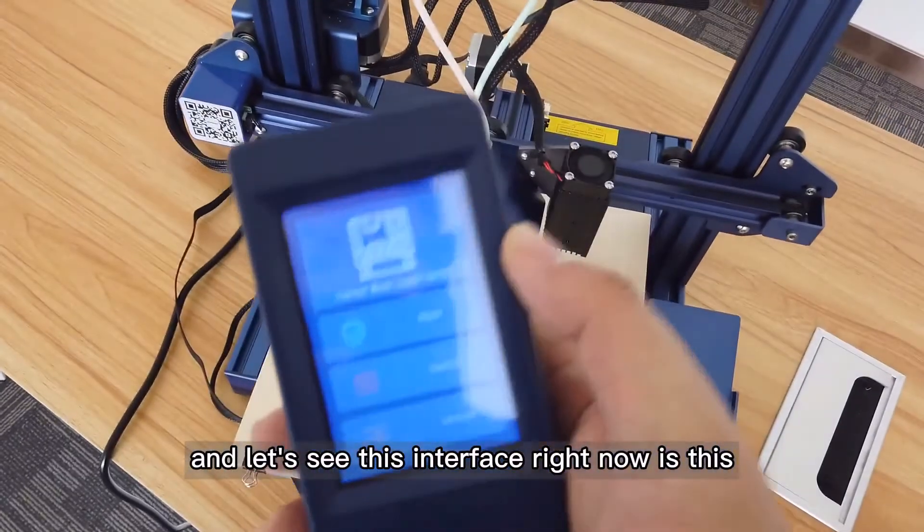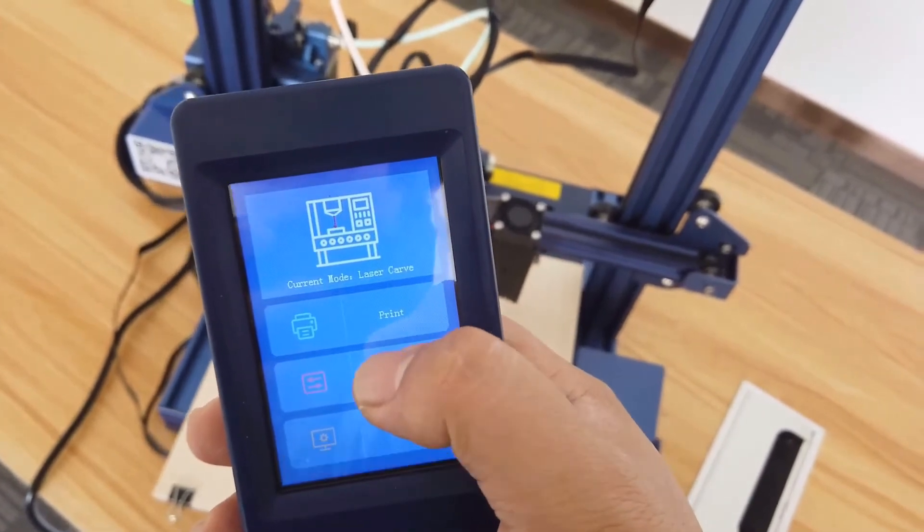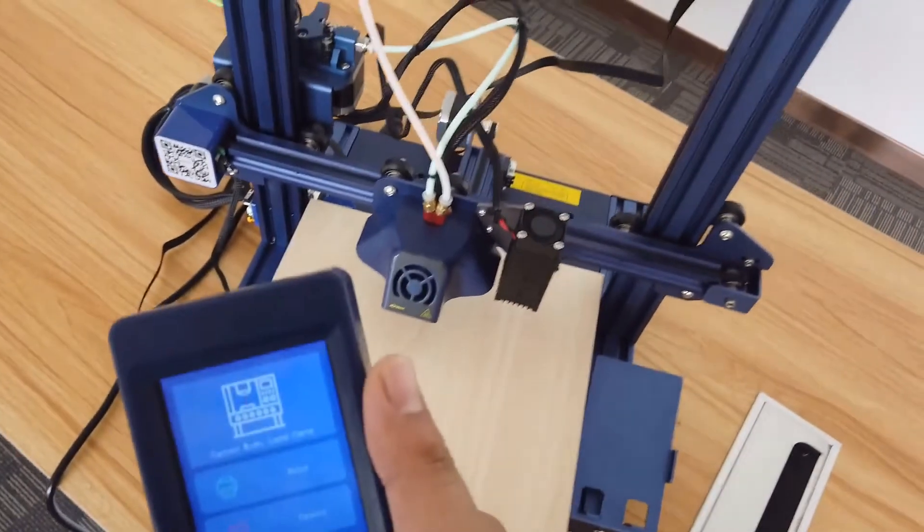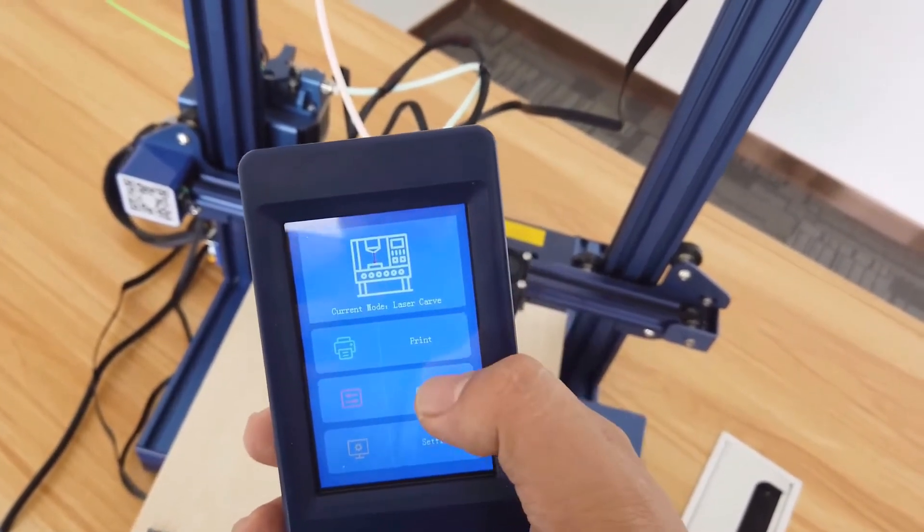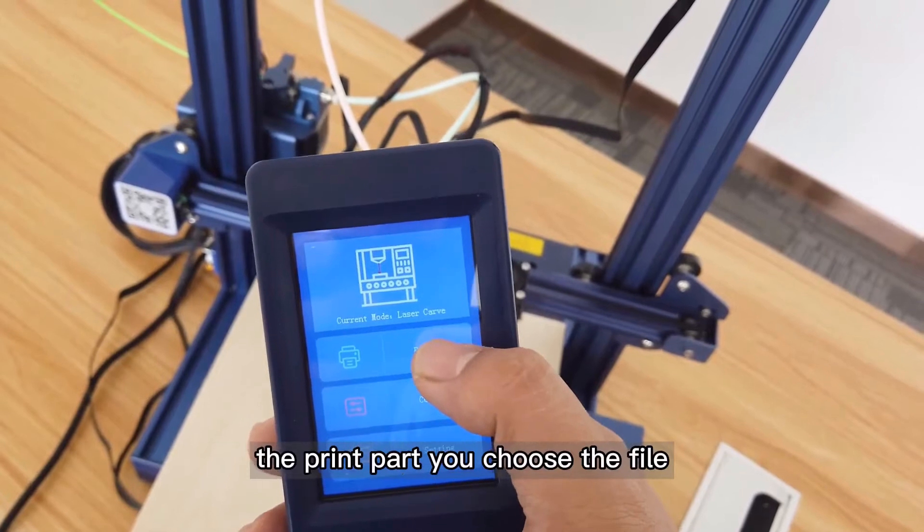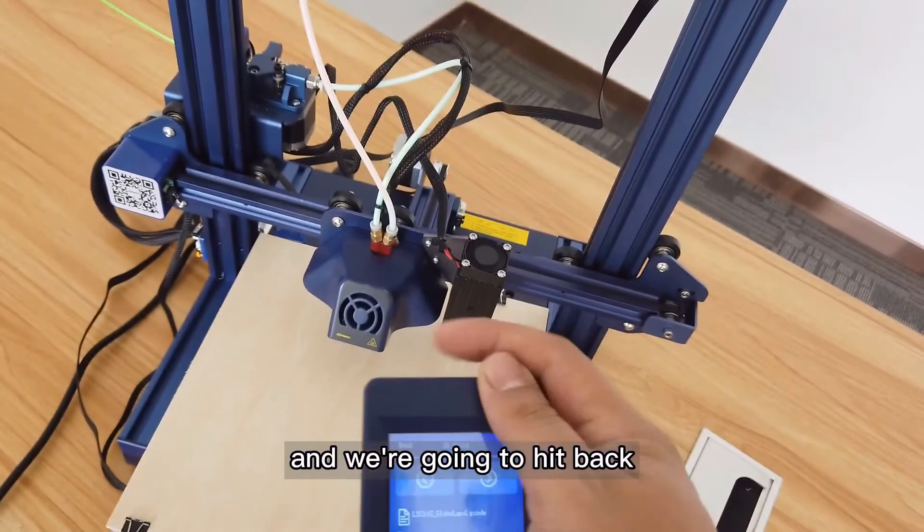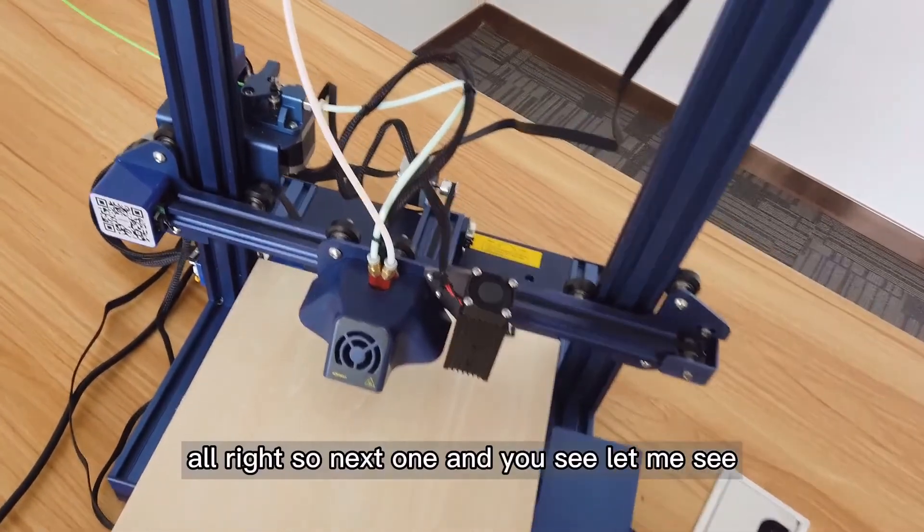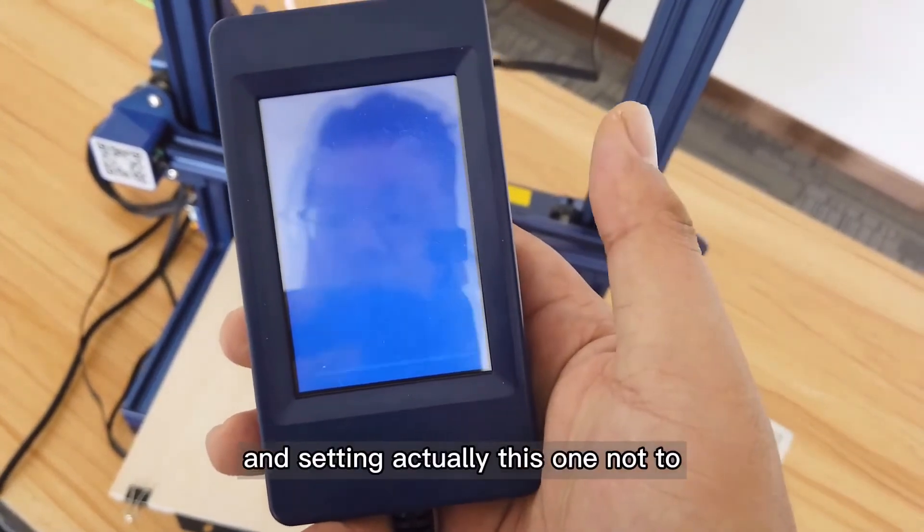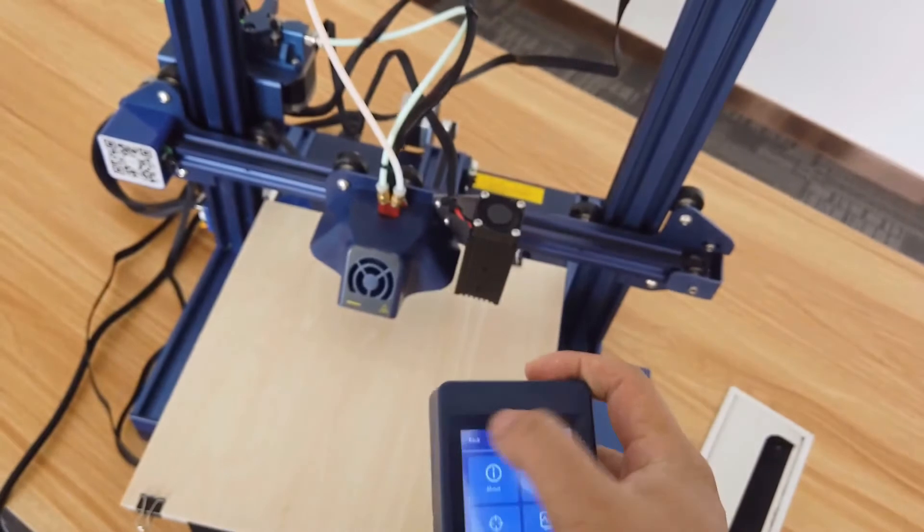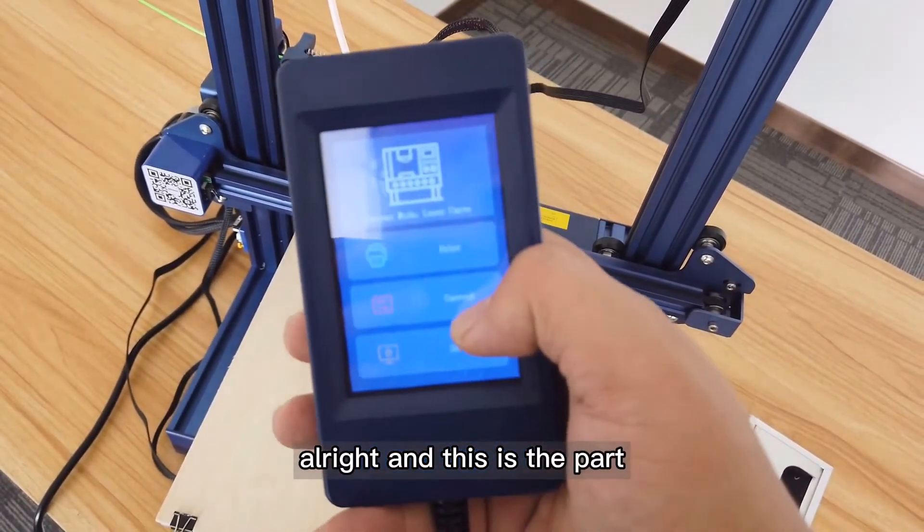This is the laser engraving interface. When you plug in it will pop out directly, you don't have to flash or upgrade anything. The print part, you choose the file. There's not a lot to talk about in this one. Let me see the settings. This one, not a lot of things to talk about.